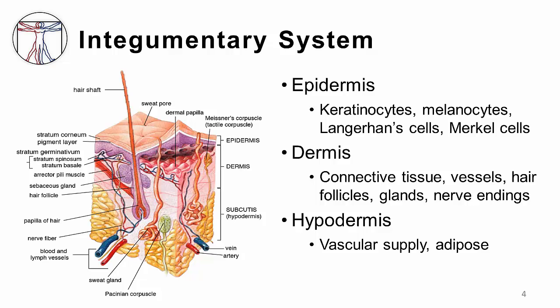Our skin is the largest organ of our bodies and forms the integumentary system, which is composed of multiple layers of tissue and associated glands plus appendages that provide defense against the outside environment. The skin can generally be divided into three broad layers: the epidermis, dermis, and the hypodermis.